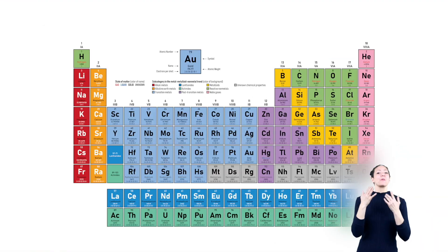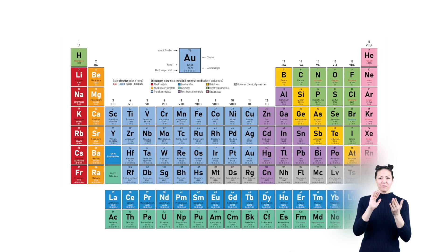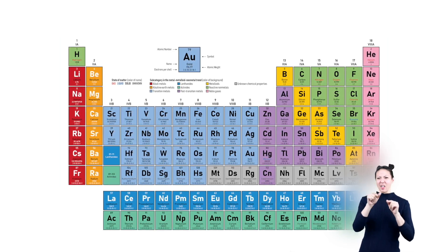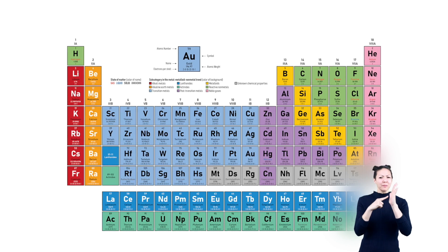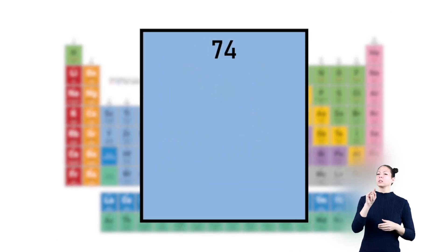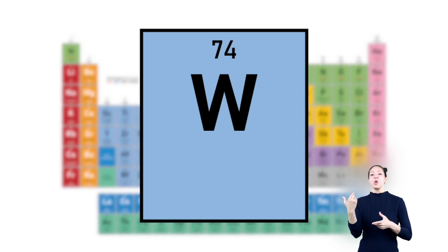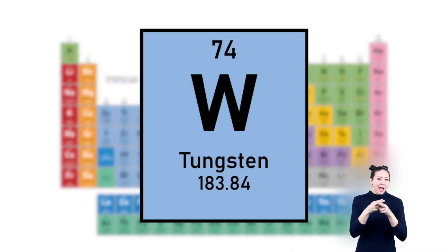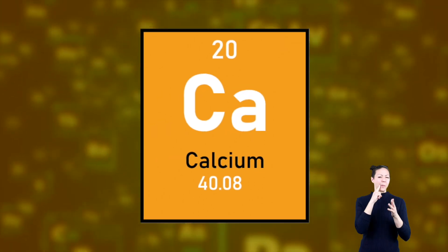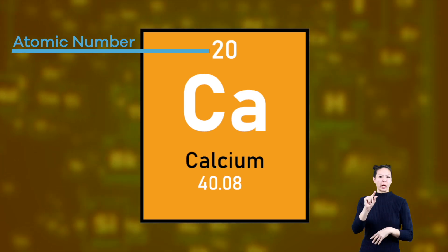The more you study the table, the more you will remember these exceptions. As you do research, you will find that some versions of the periodic table of elements show more information than others. For example, some tables may only include the atomic number and element symbol, while others include the element name, atomic weight, and more. But let's get back to calcium — calcium's atomic number is 20.